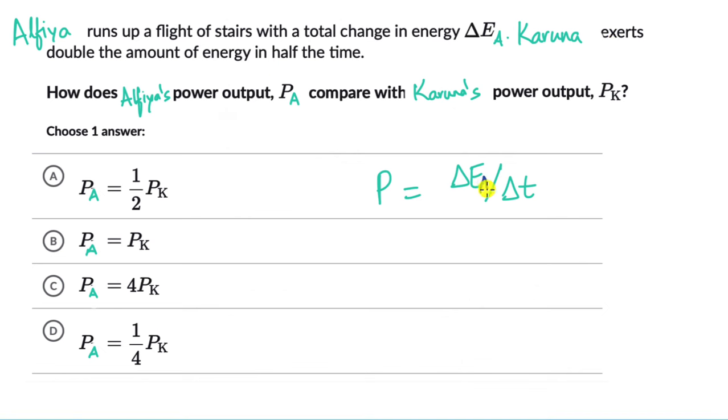So if this is delta Ea, then Karuna is exerting two times of this in half the time, so this is delta T by two. This really becomes four delta Ea divided by delta T.